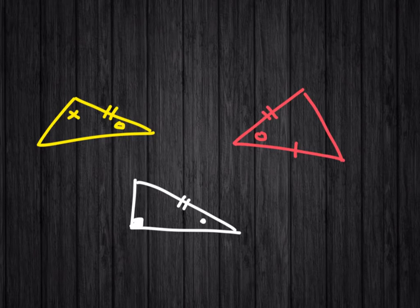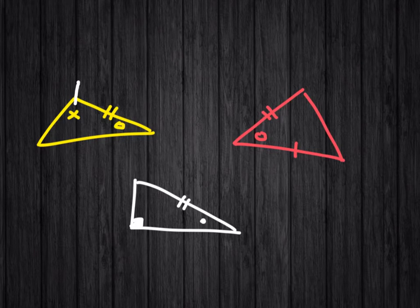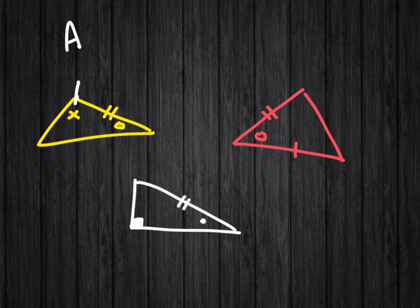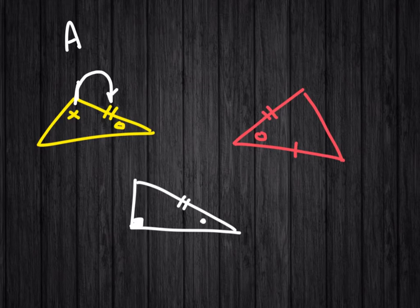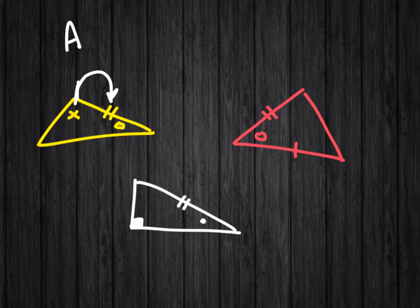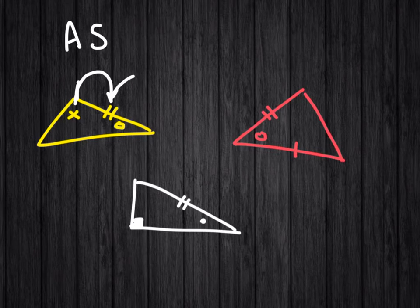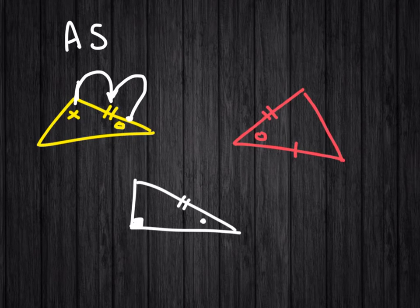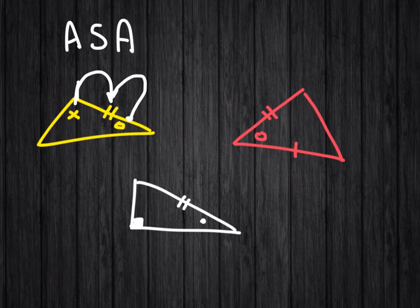What I do is I pick an angle, so that I know I have an angle. And then I look to the next side, which is known, so that's a side. And then I look to the next angle, which is also known, so this would be angle, side, angle.